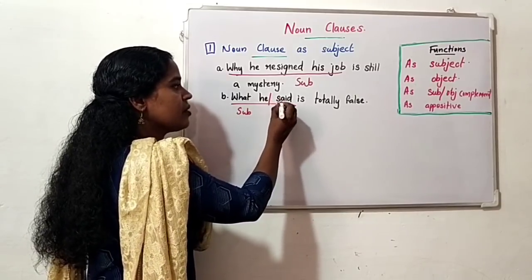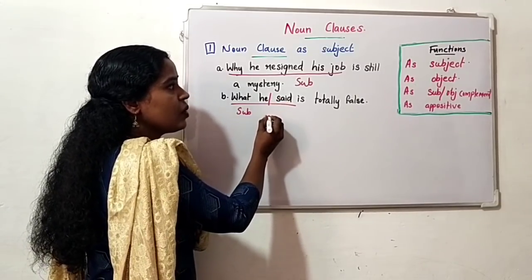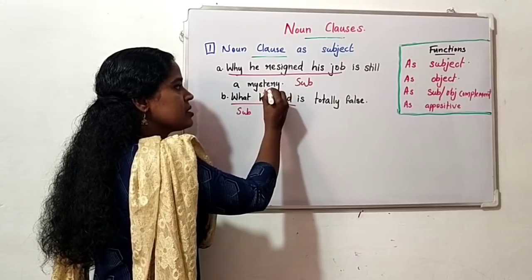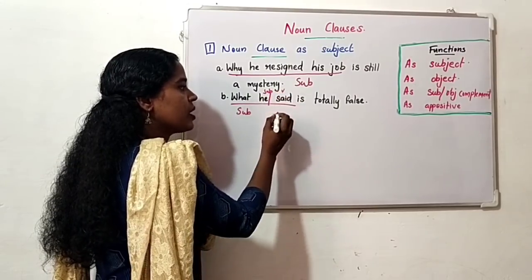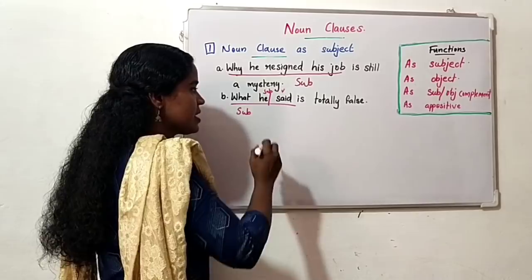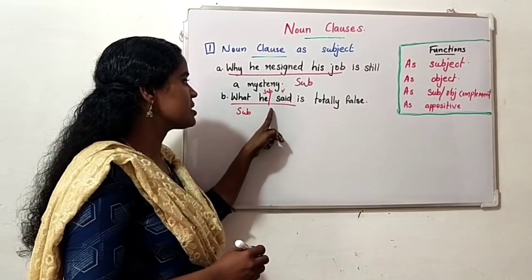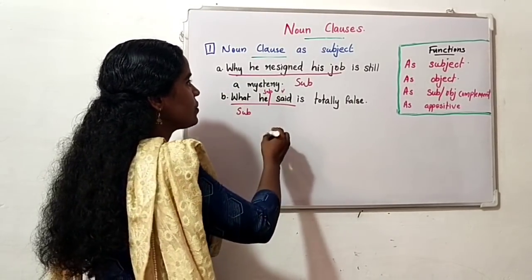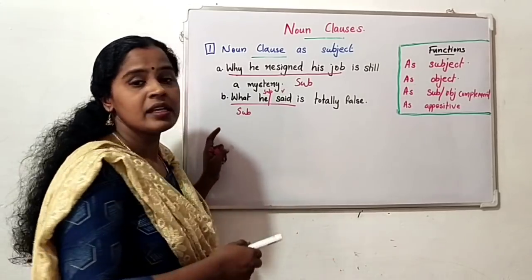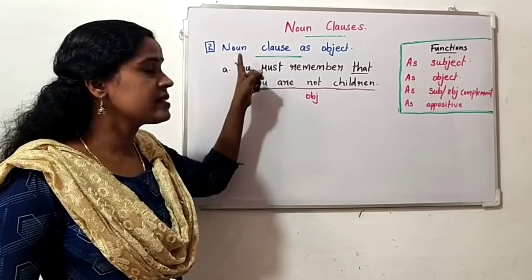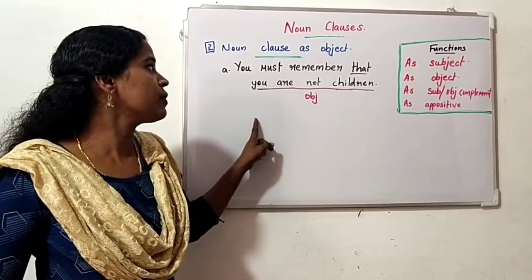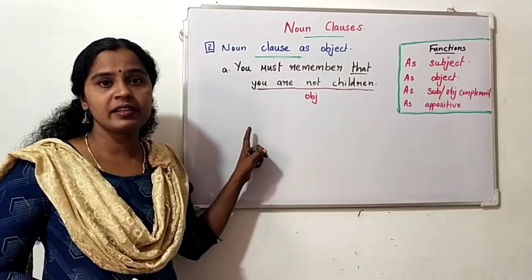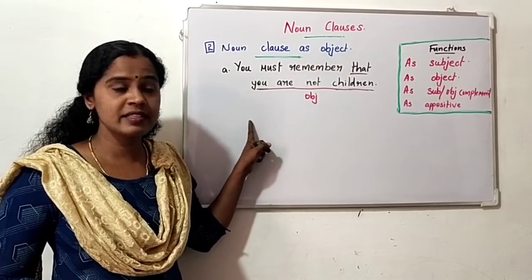'What he said' acts as the subject for the whole sentence — this is a noun clause acting as subject. Next, noun clause acts as object. Example: 'You must remember that you are not children.'